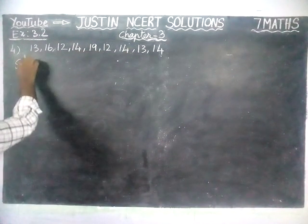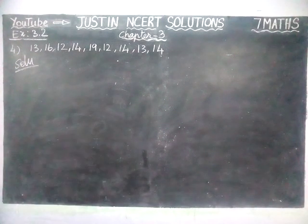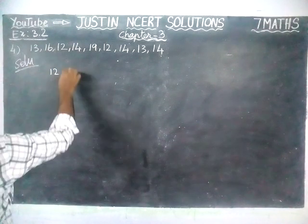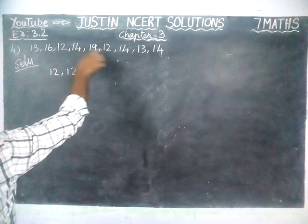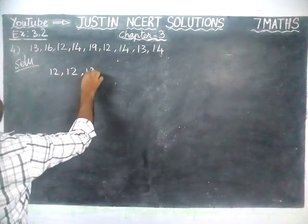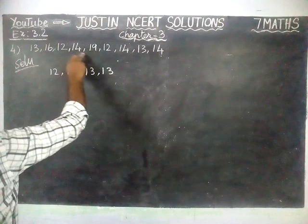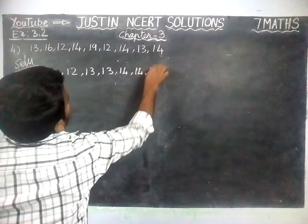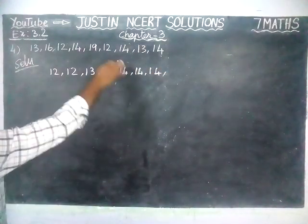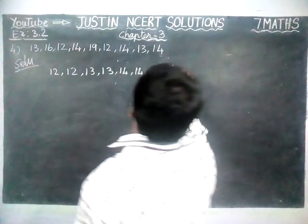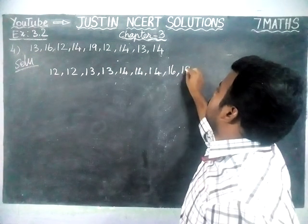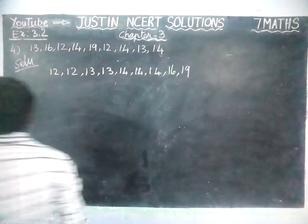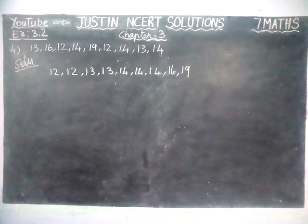First, we will arrange it in ascending order. Starting with the smallest number: 12, 12 — we have two 12s. Next, 13, 13 — two 13s. Next, 14, 14, 14 — three 14s. Then 16 and 19. So totally 9 data values, written here in ascending order.